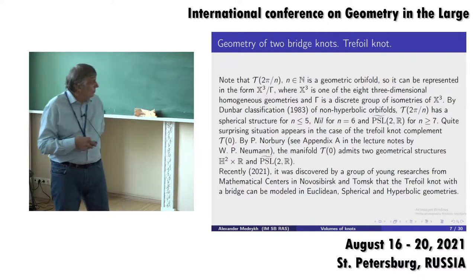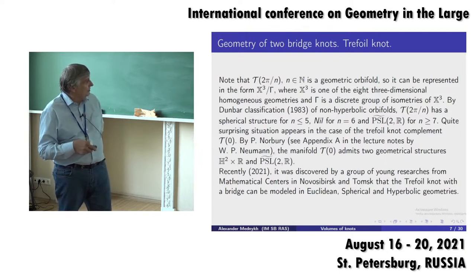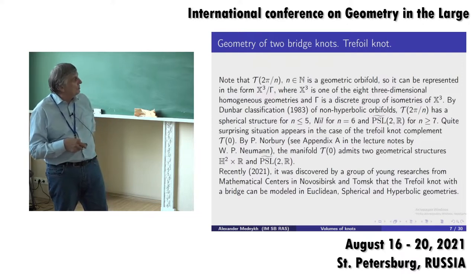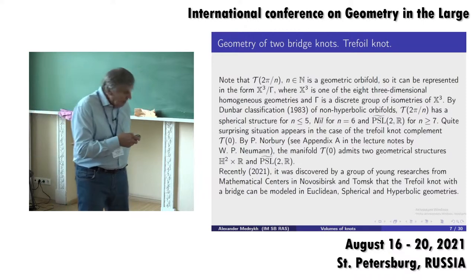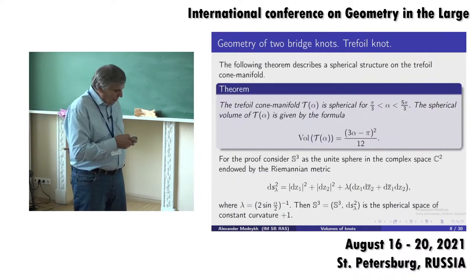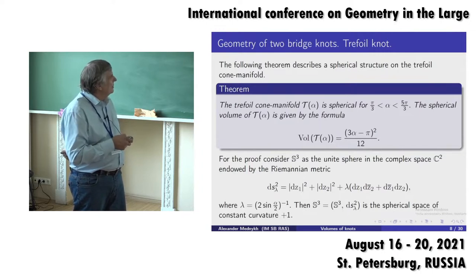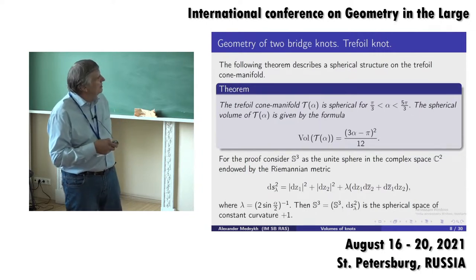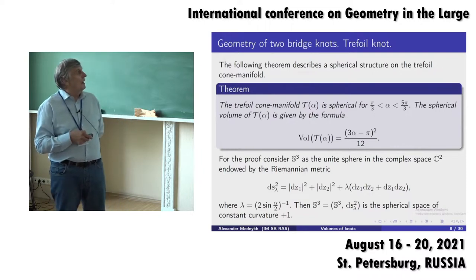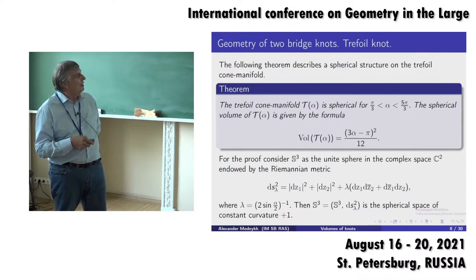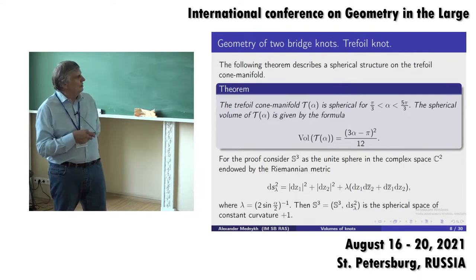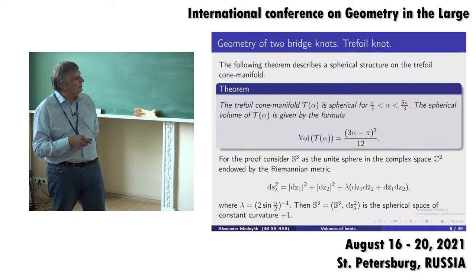Recently, a group of young researchers from Novosibirsk Scientific Center and Tomsk University showed that the torus knot with an additional bridge can be modeled in Euclidean, spherical, and hyperbolic geometries. The following result holds in spherical geometry: if the cone angles lie between two specific constants, then a spherical structure on this cone manifold exists, and moreover, the volume of this spherical structure is given by a specific polynomial.